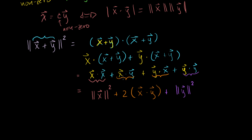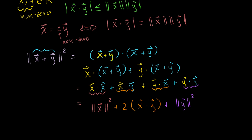Now let's break out our Cauchy-Schwartz inequality. x·y — we have the absolute value of x·y in the inequality, but we know that x·y is going to be less than or equal to the absolute value of x·y. Why? Because x·y could be negative — if x has all positive terms and y has all negative terms, you get a negative dot product. If it's positive, they're equal; if it's negative, the absolute value is definitely greater. So we can add to Cauchy-Schwartz: x·y ≤ |x·y| ≤ ||x||·||y||.